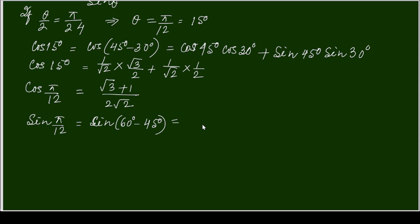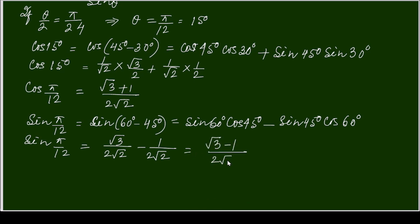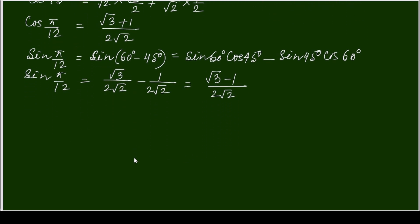For sin(π/12), using sin(45° - 30°): sin45·cos30 minus cos45·sin30. That gives (√3/2)·(1/√2) minus (1/2)·(1/√2), which simplifies to sin(π/12) = (√3 - 1)/(2√2).